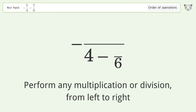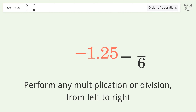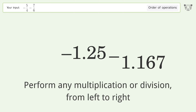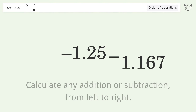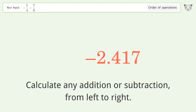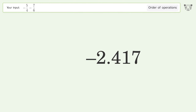Perform any multiplication or division from left to right: negative 5 over 4 equals negative 1.25, and 7 over 6 equals 1.167. Then calculate any addition or subtraction from left to right: negative 1.25 minus 1.167 equals negative 2.417. So the final result is negative 2.417.